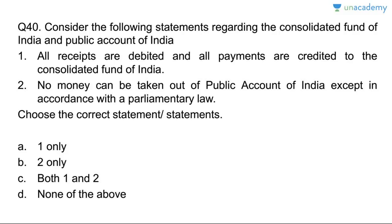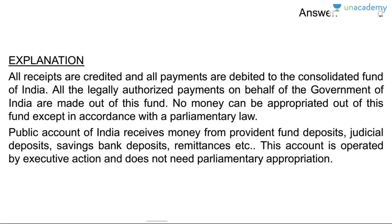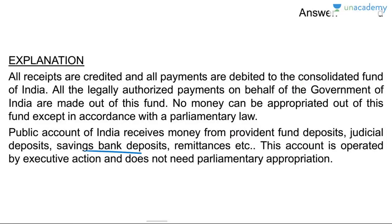Question forty: the Consolidated Fund of India and Public Account of India. All receipts are debited and all payments are credited to the Consolidated Fund — wrong. The correct statement: all receipts are credited and all payments are debited to the Consolidated Fund. No money can be taken out of the Public Account except in accordance with parliamentary law — that is also wrong. The Public Account receives money from provident funds, deposits, judicial deposits, savings bank deposits, remittances, etc., and is operated by executive action without parliamentary appropriation.